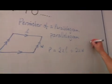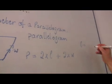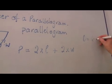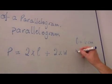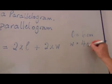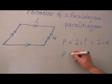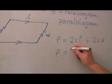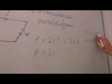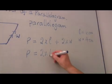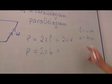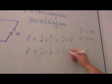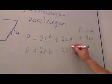So if L is six centimeters and W is four centimeters, then the perimeter will be equal to two multiplied by the length, which is six, plus two times the width, which is four.